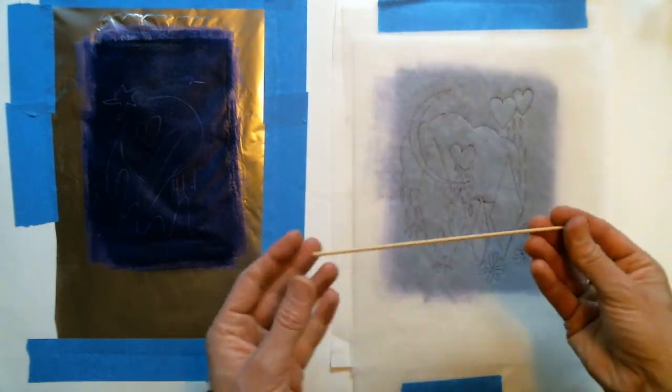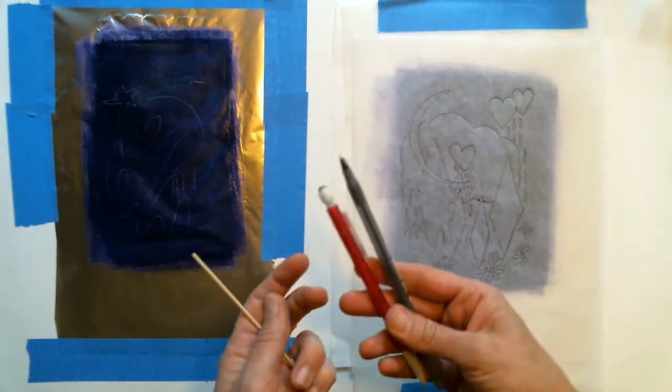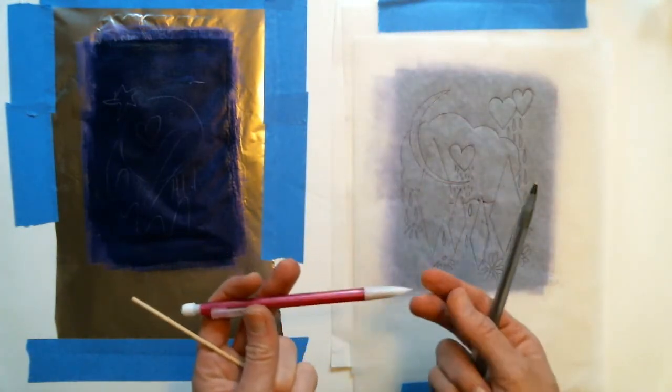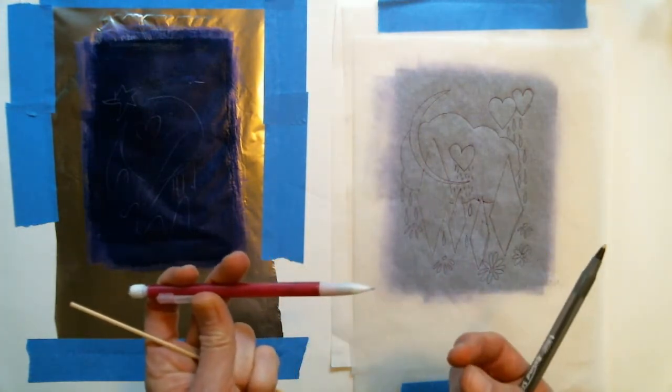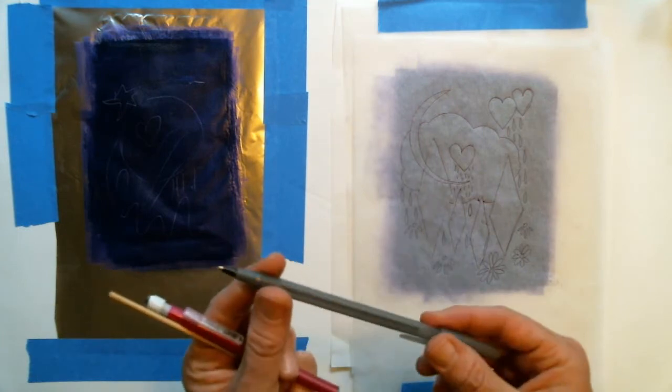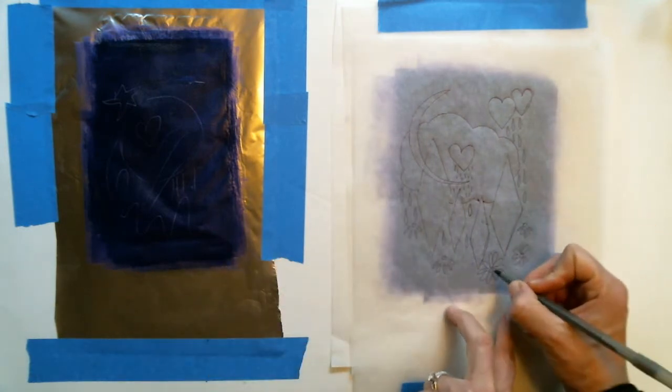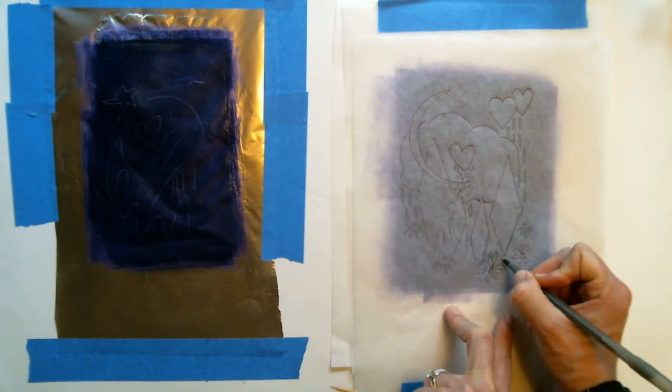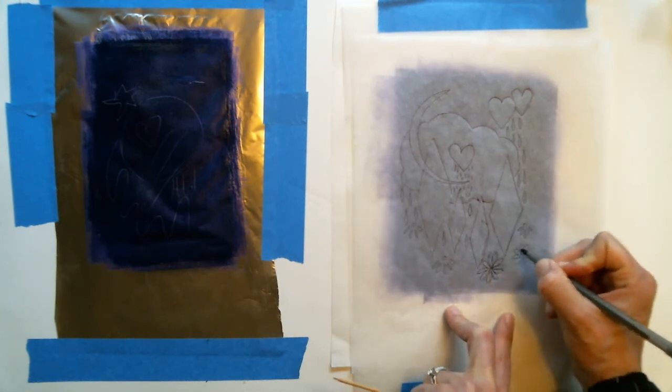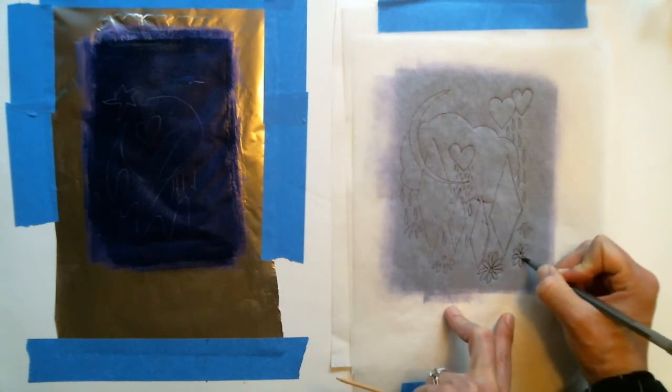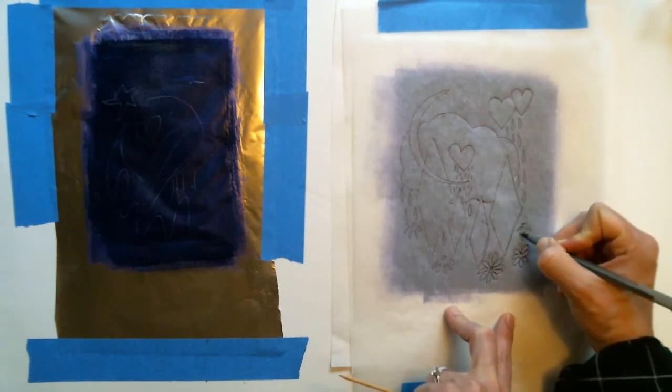You can use your fingernails, you can use any number of things. I've got a mechanical pencil, which I like to use without any lead sticking out, so that it's just the hard plastic part. You can use a ballpoint pen. But keep in mind, when you use a ballpoint pen, you end up drawing over your matrix and it can get a little muddy after a while.